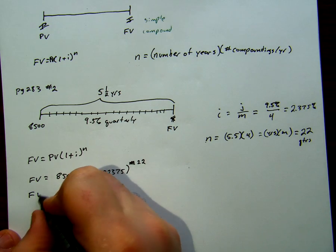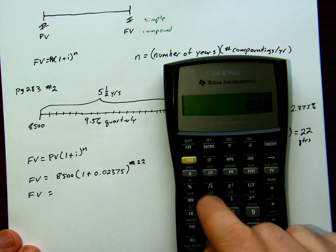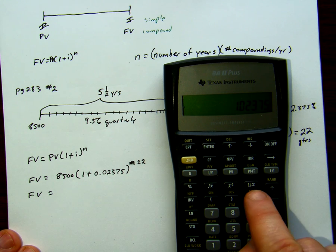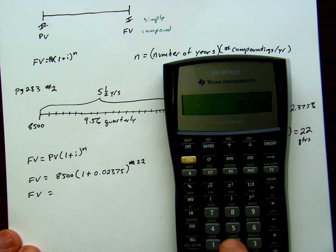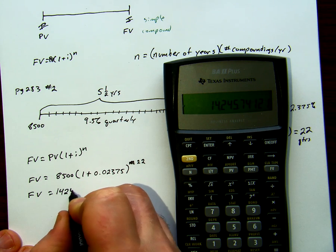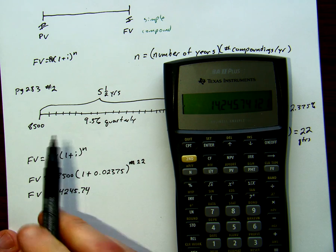So our future value is equal to, put this into the calculator, 8,500 times one plus 0.02375 to the exponent 22, 14,245 dollars and 74 cents. So our 8,500 dollars turned into 14,000 dollars.